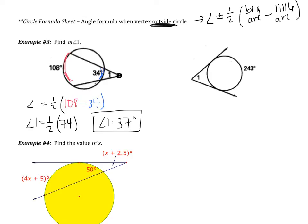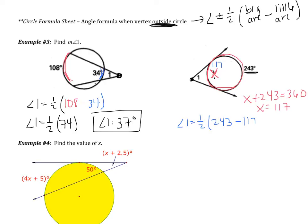In the second part of example 3, the vertex is still outside the circle, so I'll use one half of big arc minus little arc. The big arc is 243, but I don't have the little arc. Since the whole circle is 360, I set up x plus 243 equals 360, giving x equals 117. So angle 1 equals one half of 243 minus 117, which is one half of 126, giving angle 1 equals 63 degrees.